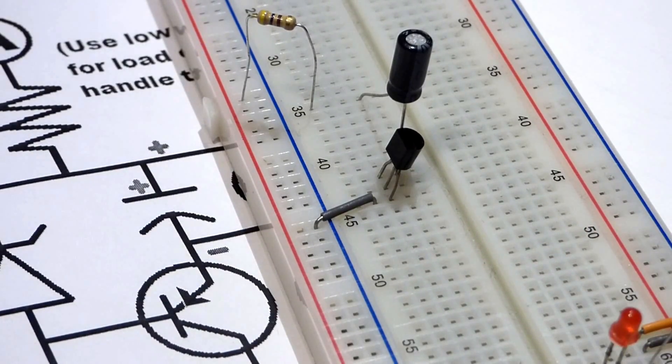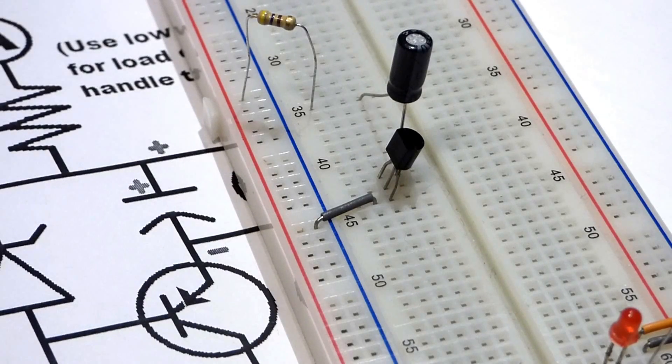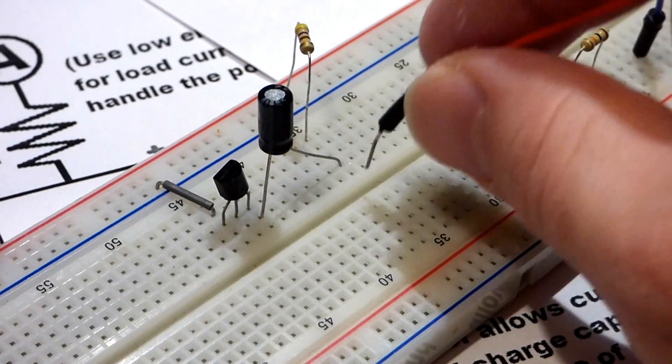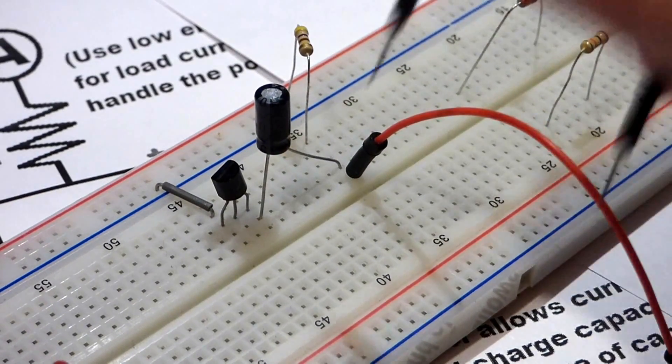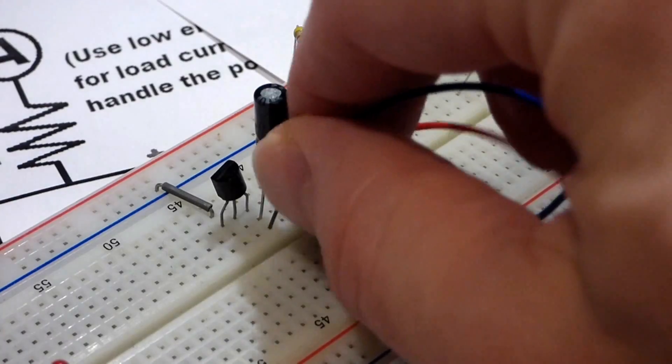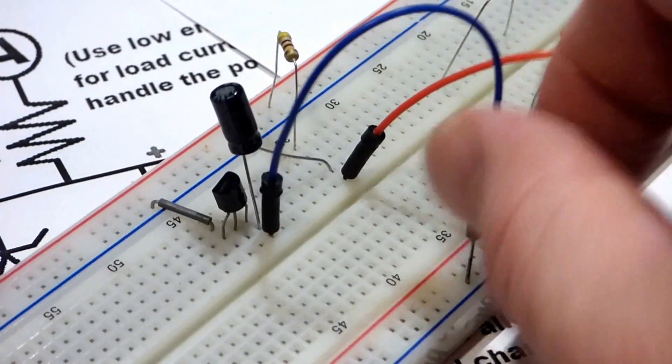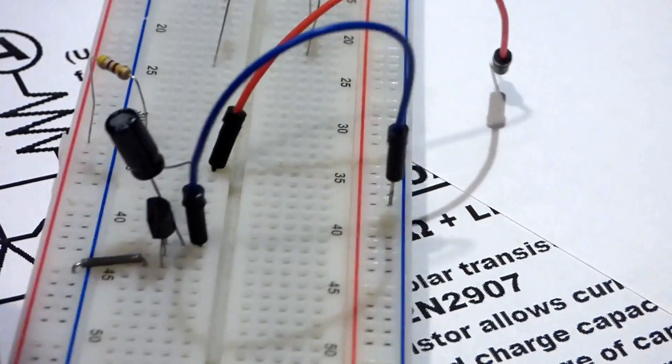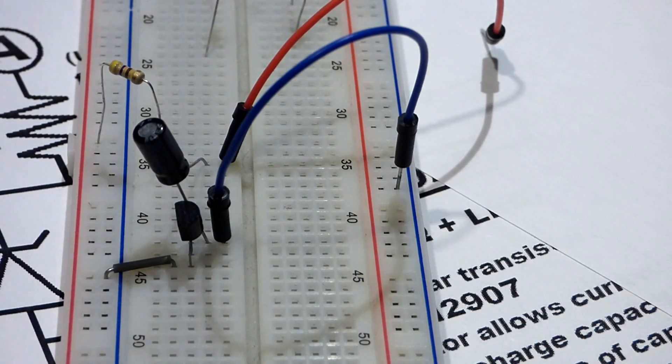The collector goes towards negative, the emitter goes towards positive. Now the transistor is going to act like a switch. We're going to take voltage readings of the capacitor by adding a red jumper to the positive side of the capacitor and a blue jumper here to the negative side. We're going to attach the multimeter so we can take a voltage measurement while we're testing out the circuit.